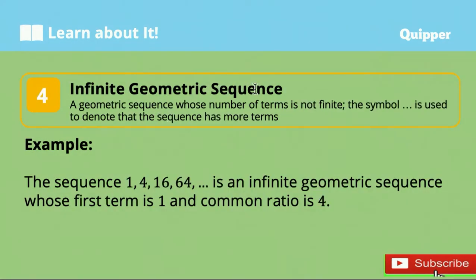Next is an infinite geometric sequence. It is a geometric sequence whose number of terms is not finite, or we cannot count the number of terms. The symbol ellipsis is used to denote that the sequence has more terms. For example, the sequence 1, 4, 16, 64, and so on is an infinite geometric sequence whose first term is 1 and the common ratio is 4. Therefore, we cannot identify the last term since there is no last term here. It goes to infinity.